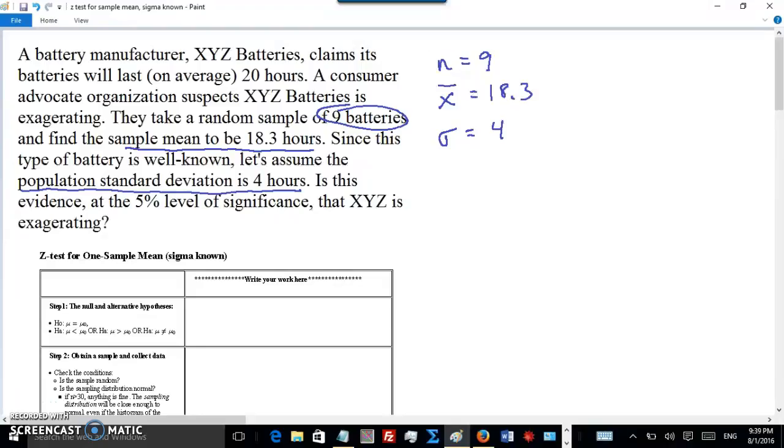Now, before we get to the steps, let's look at this from a common sense point of view. The company says 20 hours is their average battery life. The sample says 18.3. Yes, that is less, and so that's at least some evidence that the manufacturer is exaggerating.